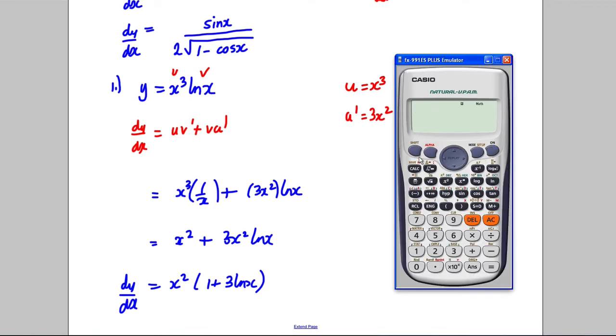I'll differentiate the original function x cubed times the natural logarithm of x at x equals 5 and get 145.7. Putting 5 into the final answer, x squared times 1 plus 3 times the natural logarithm of x, I get 145.7, so I know this is correct.